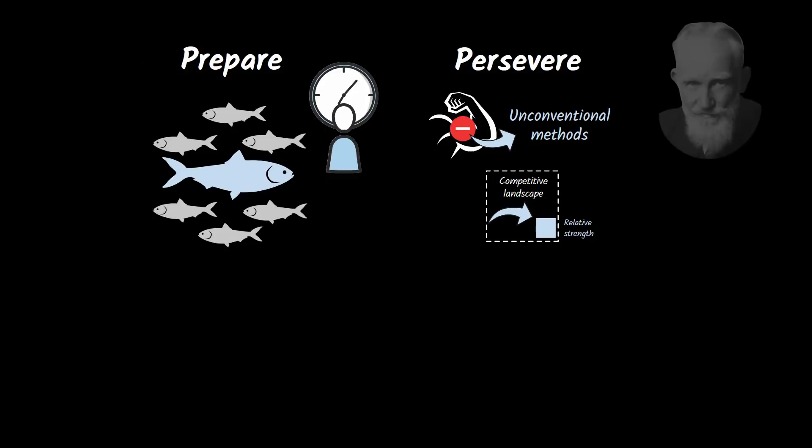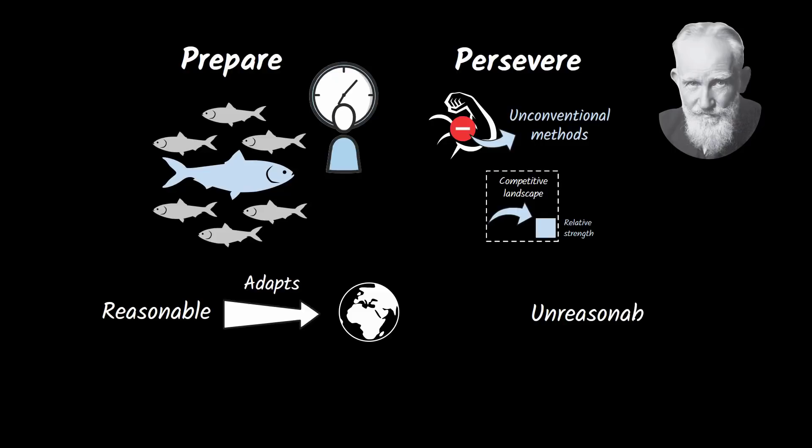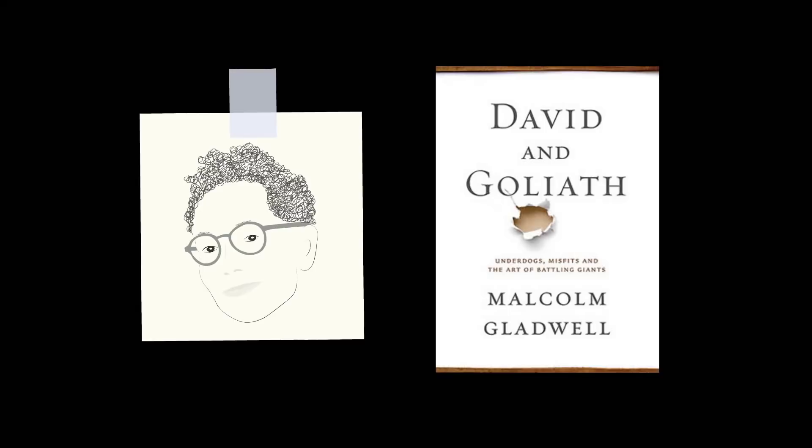As the playwright George Bernard Shaw once said, the reasonable man adapts himself to the world. The unreasonable one persists in trying to adapt the world to himself. Therefore, all progress depends on the unreasonable man.